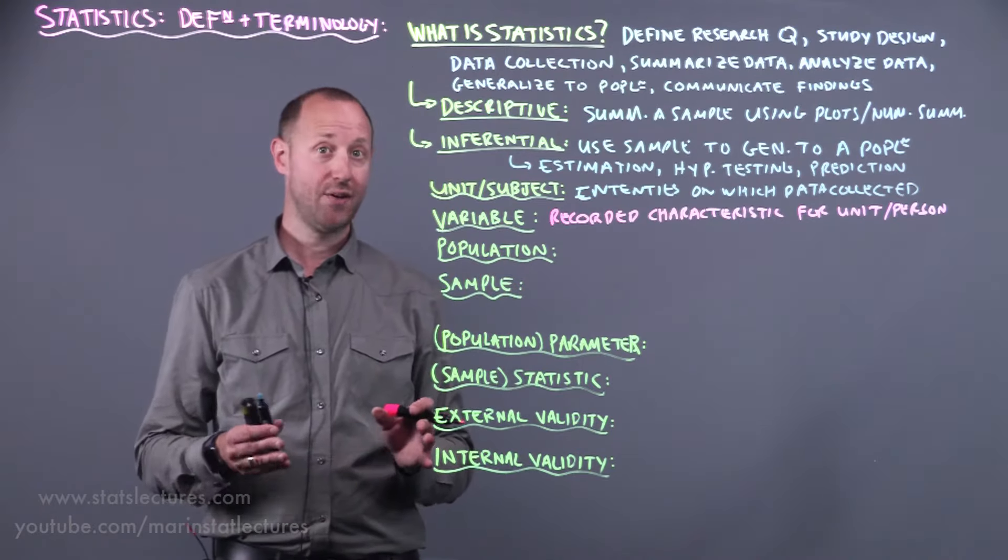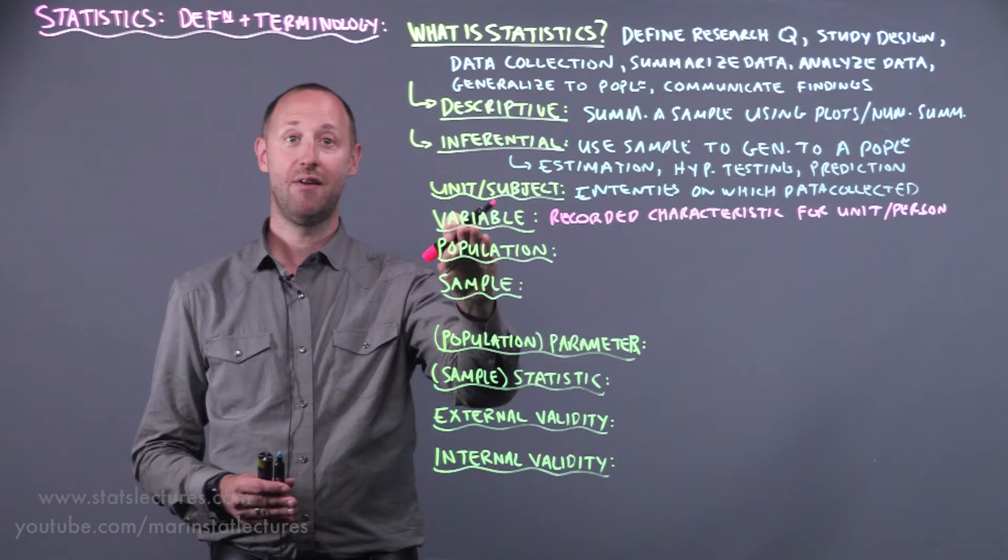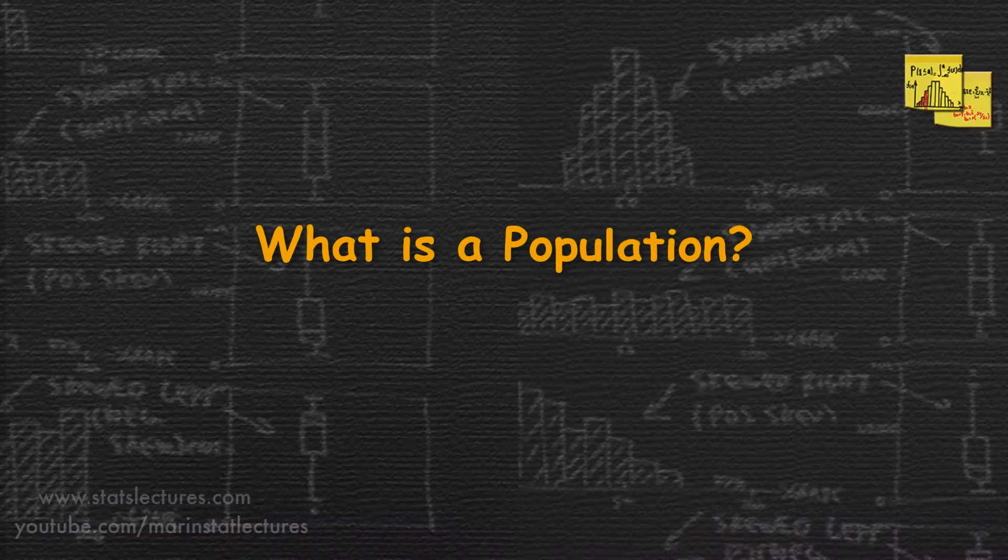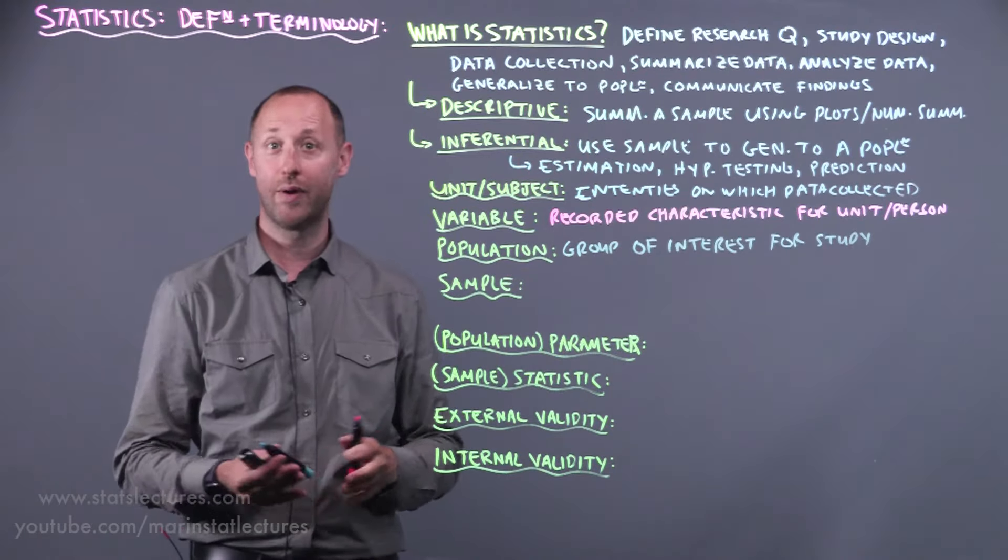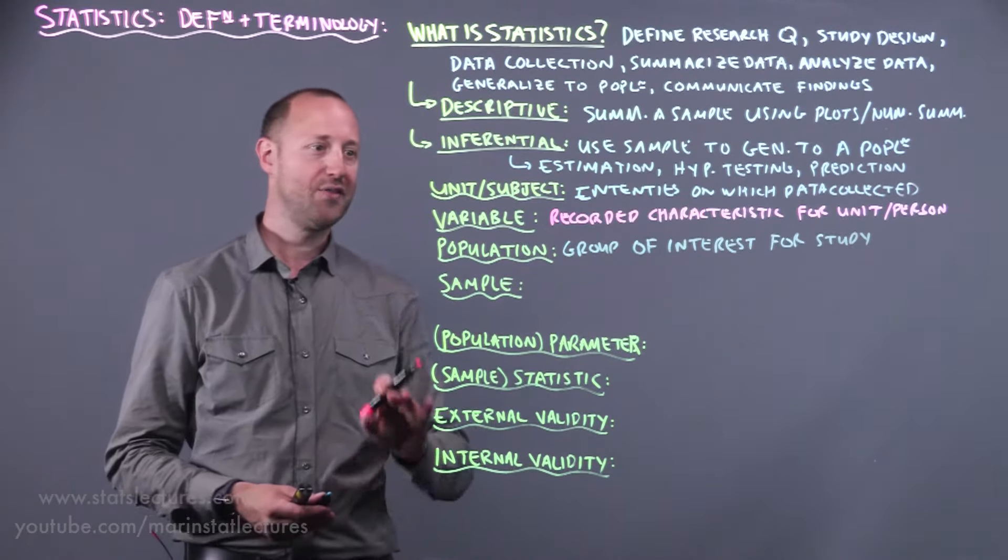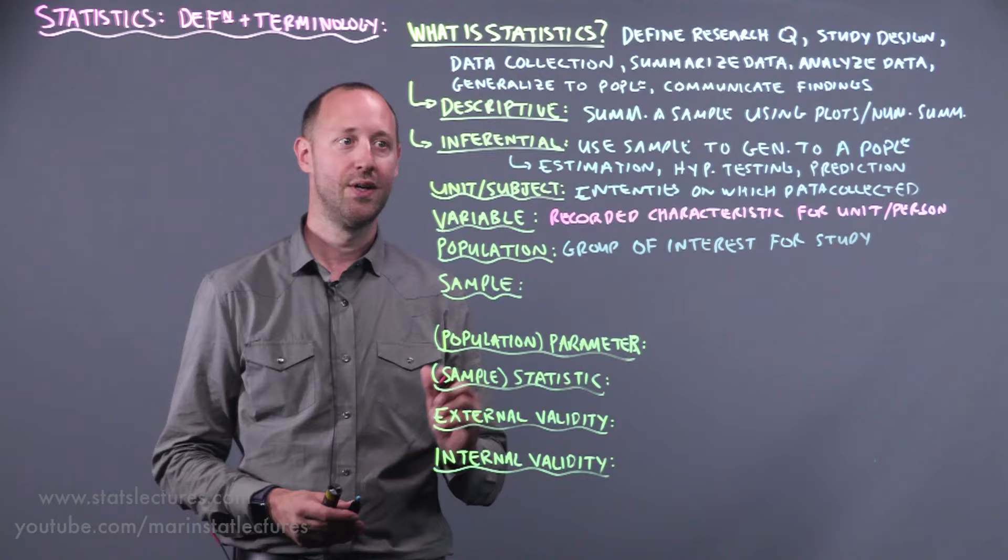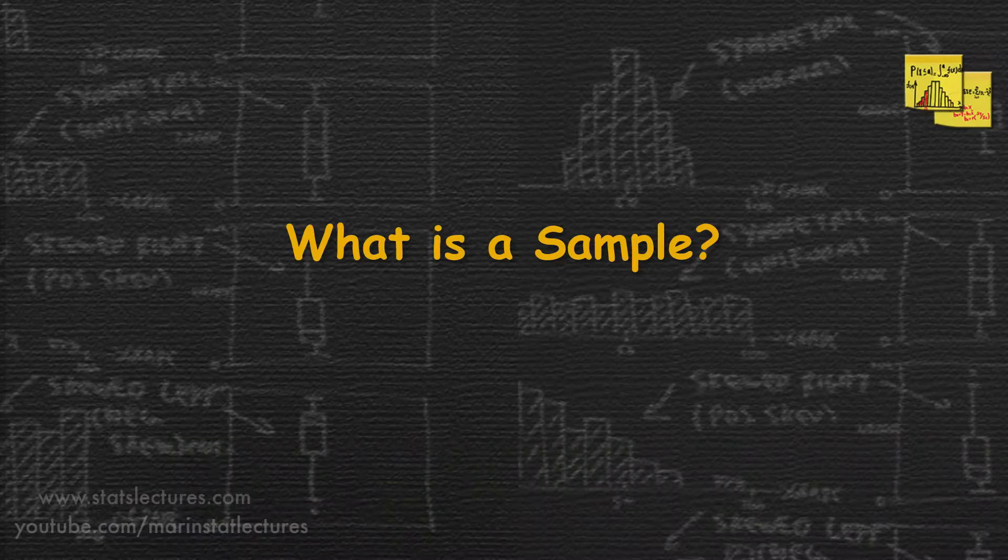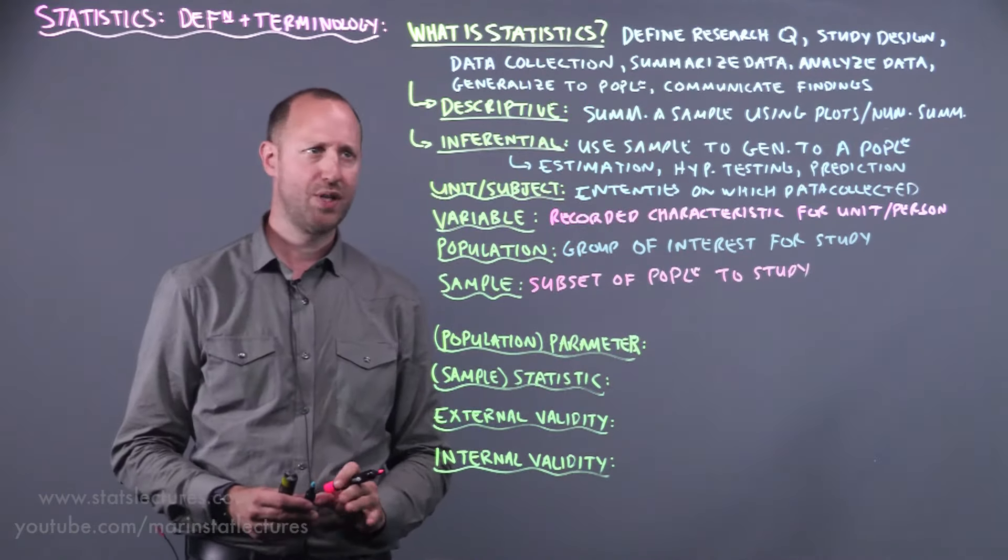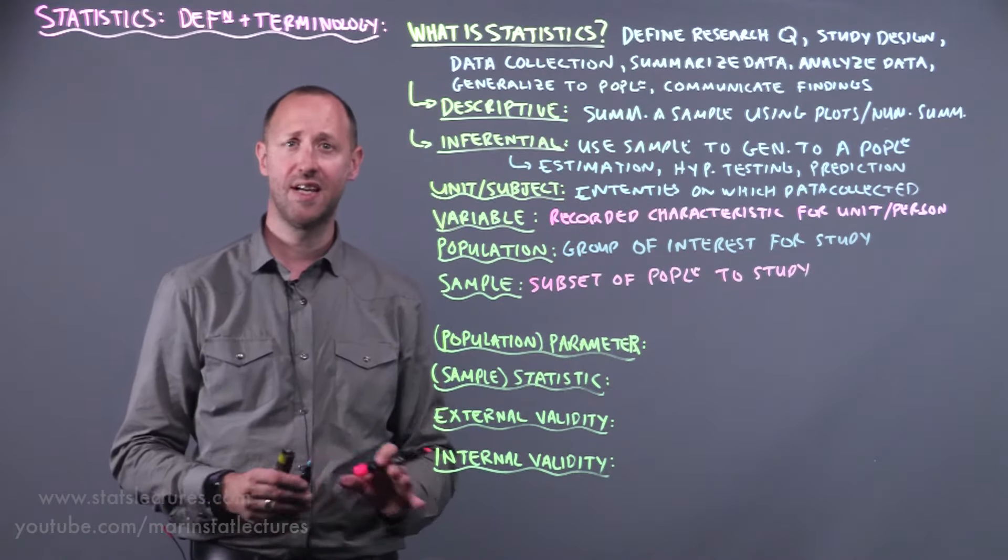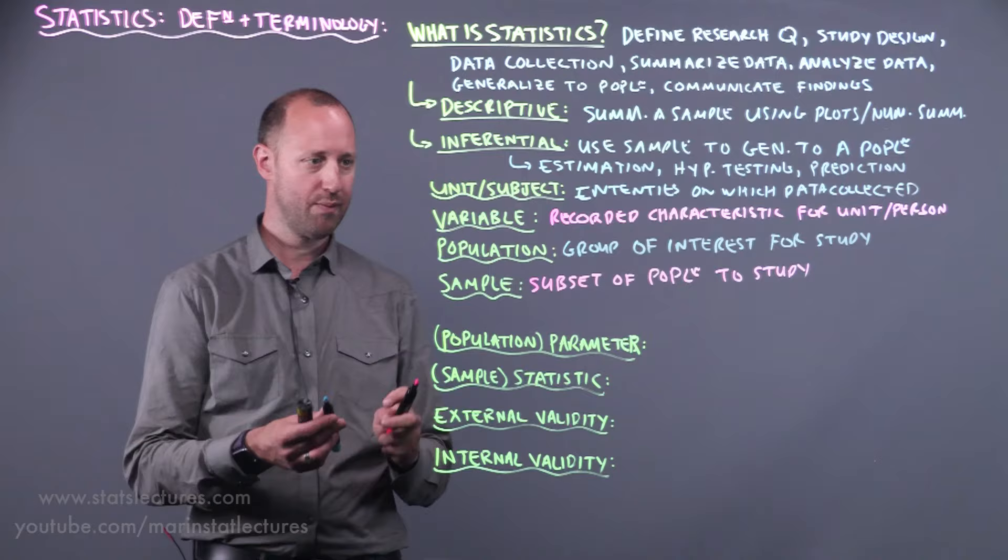Usually we have a set of data or a data table. It's often organized with individuals or units in the rows and variables in the columns. Now the population is the group of interest for our study, so that is who or what are we interested in studying. Now often studying an entire population is difficult. It's too large or expensive or time consuming or just not possible. So what we do is we work with a sample, and a sample is a subset of the population to study. And it's important to remember this.